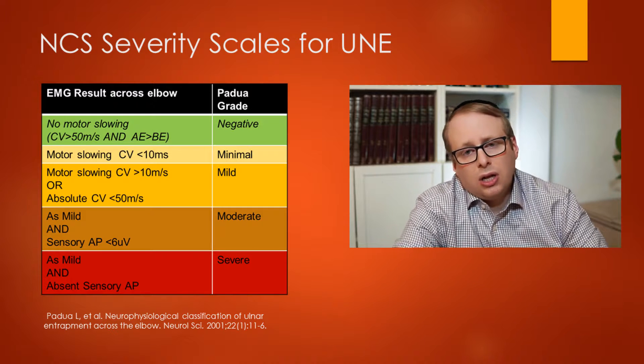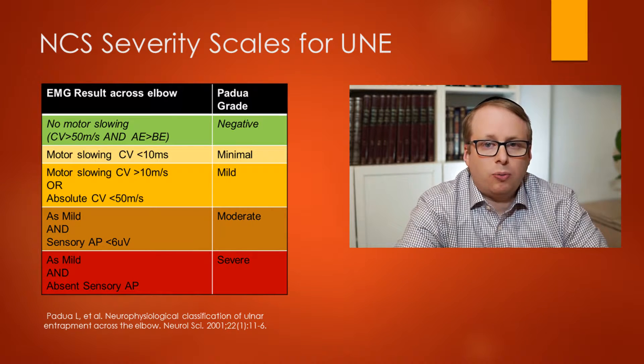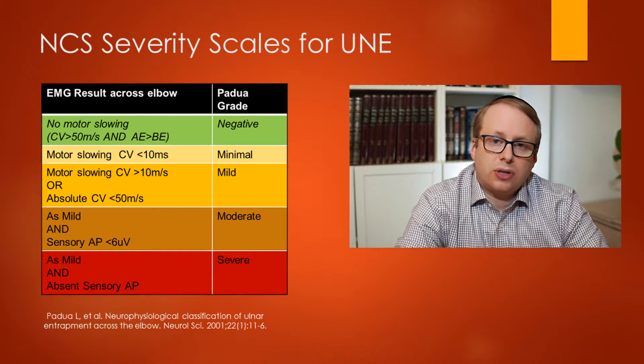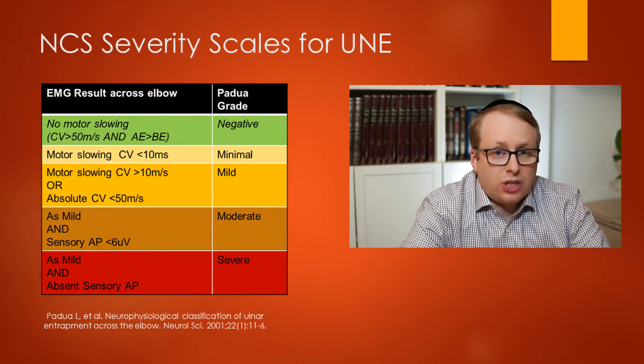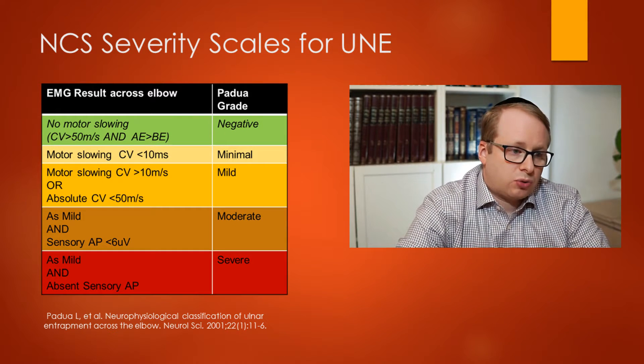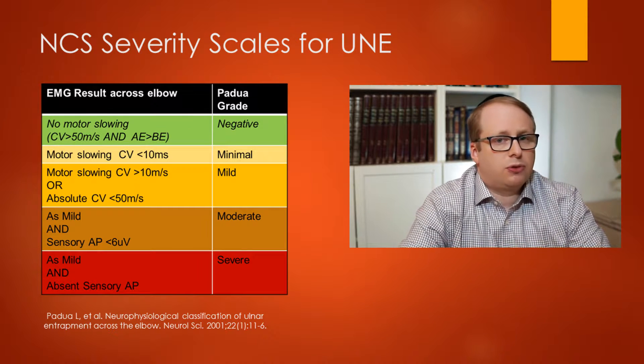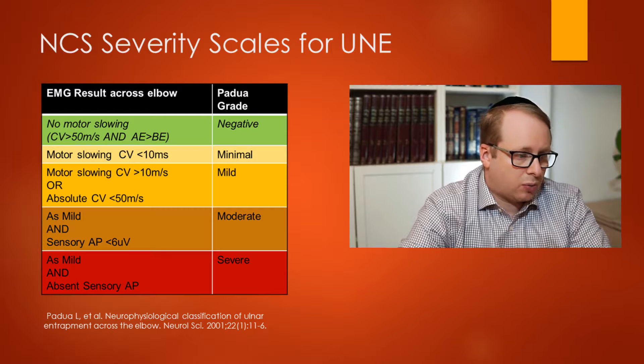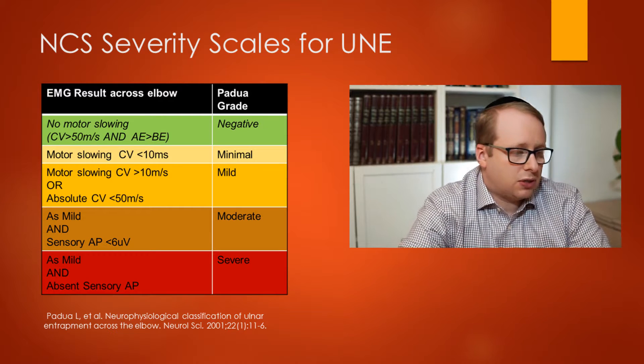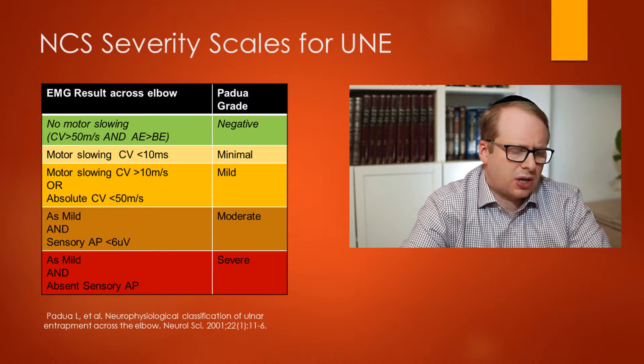In terms of the Padua grading system, to have minimal ulnar neuropathy at the elbow, one has to demonstrate conduction velocity slowing of less than 10 meters per second. So, for example, if the forearm conduction velocity was, let's say, 54 meters per second and it slowed down to, let's say, 48 meters per second, then that would be a minimal ulnar neuropathy at the elbow, assuming that the sensory response was still normal. For it to be mild, then the conduction velocity slowing would have to be greater than 10 meters per second and, in absolute terms, less than 50 meters per second. One always has to consider the relative slowing here. I think it's very important that.